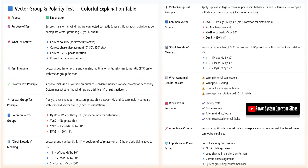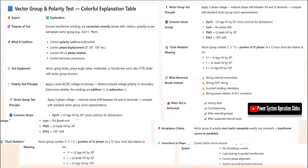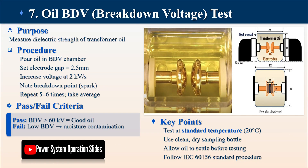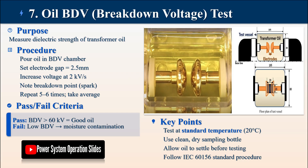The sample is sent for gas chromatography analysis, which identifies key gas indicators: acetylene indicates arcing, methane and ethylene suggest overheating, while hydrogen points to partial discharge. Regular DGA sampling provides early warning of developing faults and is one of the most effective predictive maintenance tools for transformers.